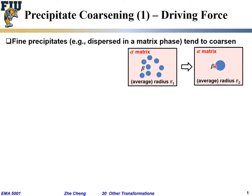In this coarsened state, dislocations can move very long distances within the single alpha phase without being pegged down, inhibited, or running into a secondary phase. If dislocations can move long distances, the material appears softer and weaker.